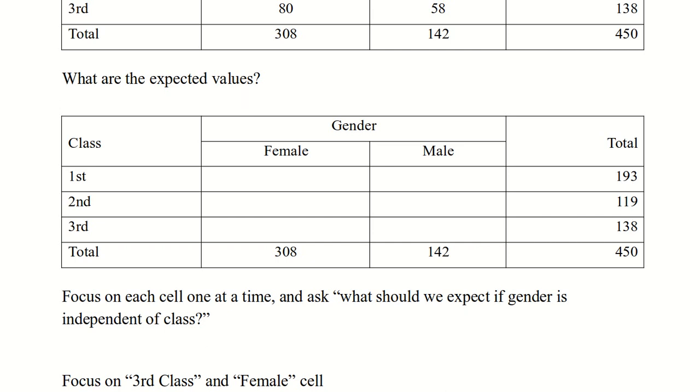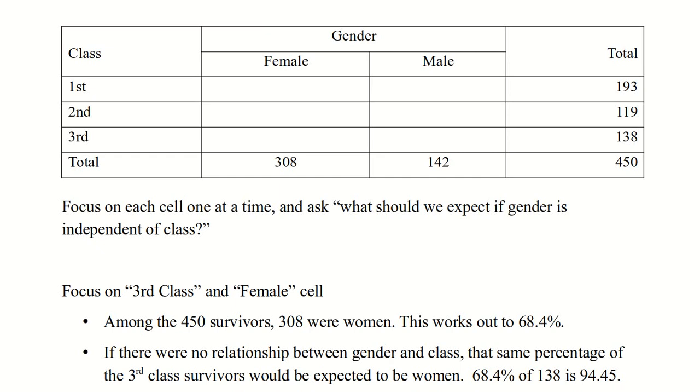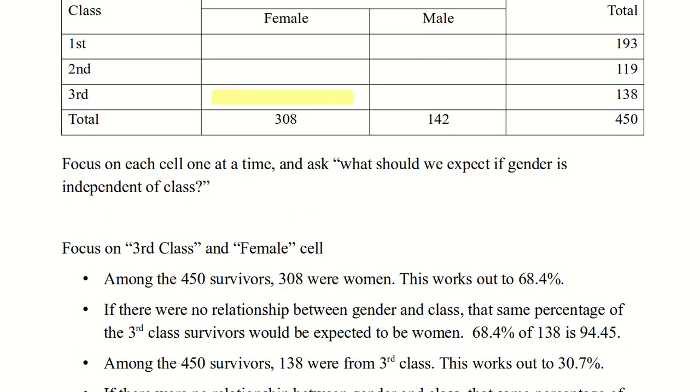So let's ask this question for one cell at a time. What would we expect if gender is independent of class? So let's look at the third class female cell, that's right down here. We can ask the question, among the 450 survivors, 308 were women. So that's 68.4% approximately. So if there was no relationship between gender and class, then that same percentage of third class survivors would be expected to be women. In other words, of the 138 third class survivors we'd expect 68.4% of them to be women. That's 94.45.